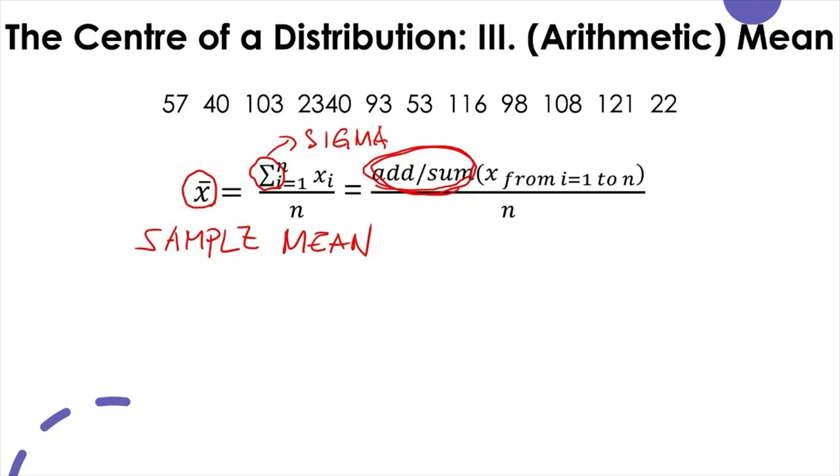Whatever comes on the right of this symbol means add all the numbers on the right. So i here is an index of data. Add the data from the first data to the n, which is the last member of the data. So add from the first data to the n. All these are subscript and superscript. That has to do with the data index. From i equals one to n.